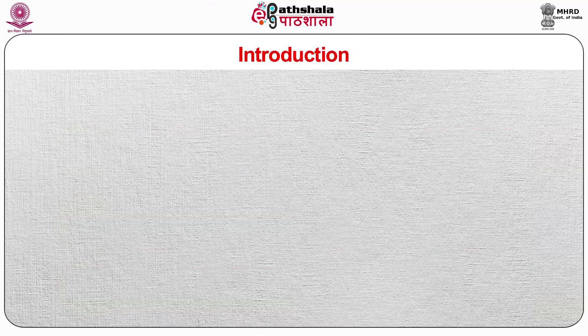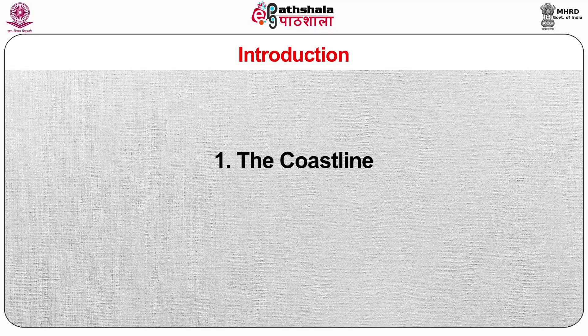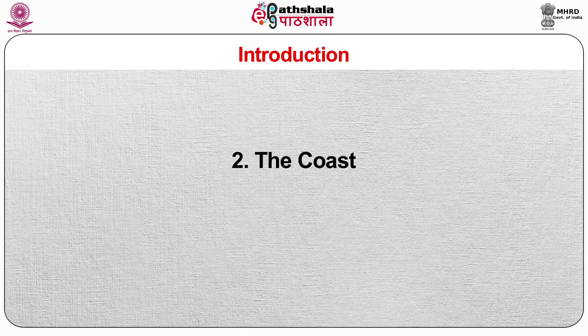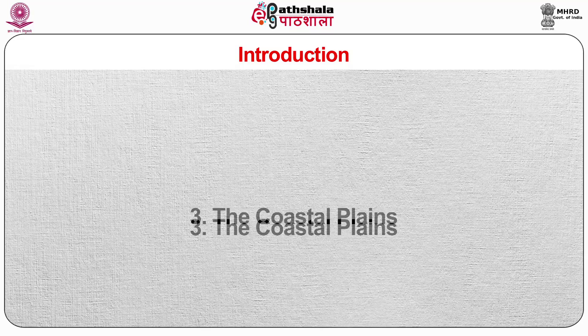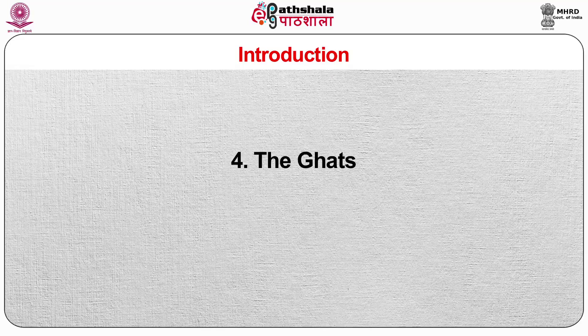A coastal region can be divided into four parts: the coastline, the coast, the coastal plains, and the ghats.